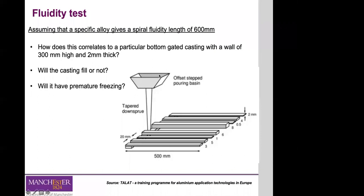This is an example of how traditional testing systems could be improved. In this improved system, you have the pouring cup and sprue, but then all the running channels similar to what you have in a casting mould. You can change different parameters — the length of your runners, the thickness — and this allows you to simulate different conditions in your mould, giving a much more accurate and realistic measure of fluidity for your specific casting system or parts.